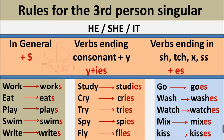Verbs ending in a consonant plus Y: change Y to IES. For example: study → studies, cry → cries, try → tries, spy → spies, fly → flies.